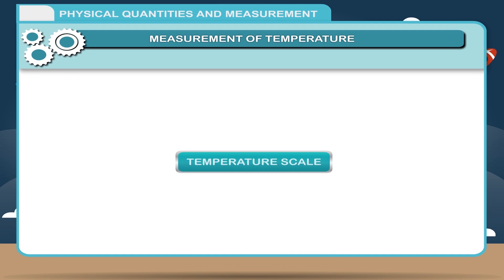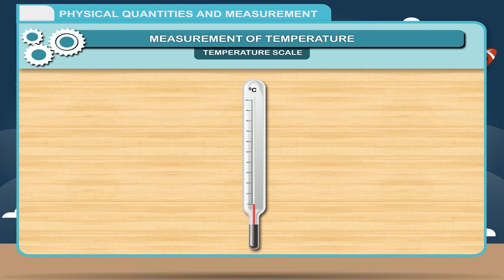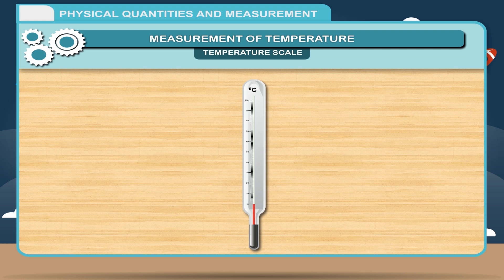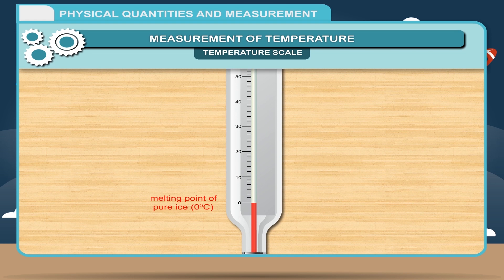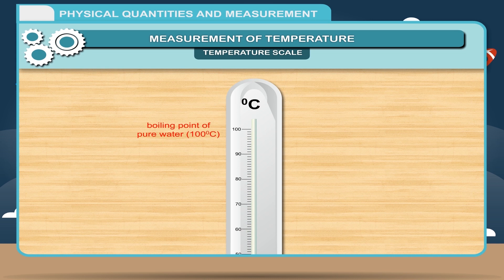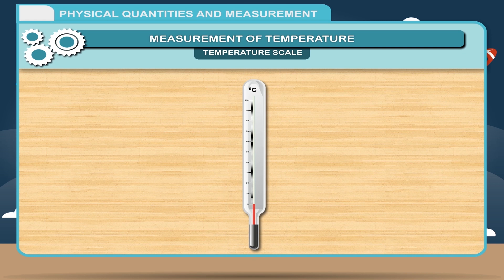A liquid thermometer has a bulb at one end and a long stem which is graduated in degrees. The scale of a thermometer is usually divided between two points: the melting point of pure ice, 0 degree Celsius, and the boiling point of pure water, 100 degree Celsius. These two points are called the lower fixed point and the upper fixed point.